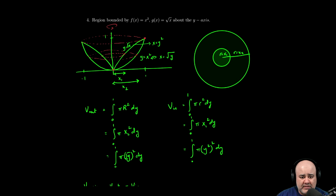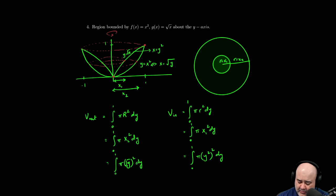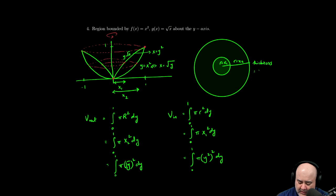Now, the washer method would start the exact same way. You'd still draw a 3D representation, still draw a representative slice. I forgot in the previous video to mention that the thickness, I used it but I didn't write it down, would be dy, because we're slicing horizontally. So if we slice horizontally, the thickness will be some vertical distance, or dy.